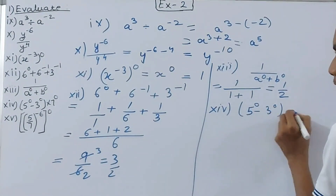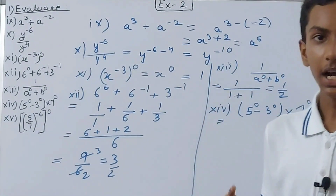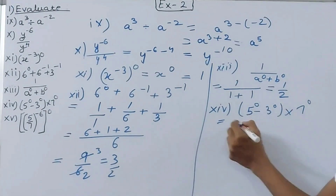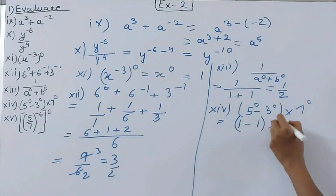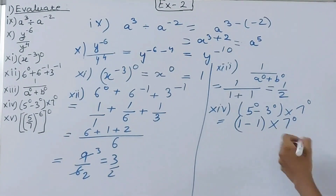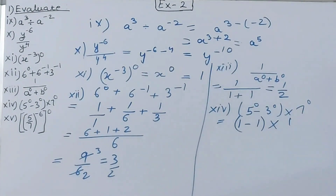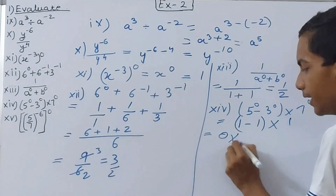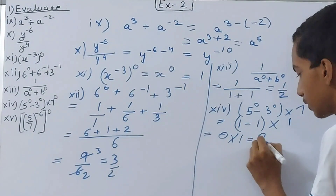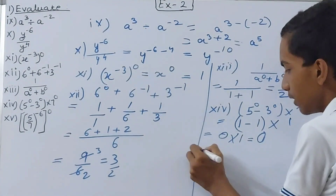The 14th part is 5 to the power 0 minus 3 to the power 0 inside brackets, multiplied by 7 to the power 0. Solve the bracket first: 5 to the power 0 is 1, minus 3 to the power 0 is 1, so the bracket gives 1 minus 1 equals 0. Then 7 to the power 0 is 1. So 0 times 1 equals 0.